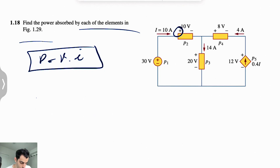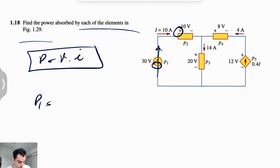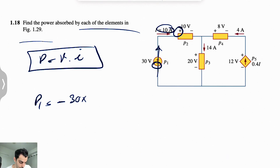Alright, so let's start with P1. If we look at it, the current is actually in this direction, so it's entering the negative pole of all of these elements, so we're going to have a negative sign. We need voltage times the current — the voltage is 30 and the current is 10 amps — so that gives us minus 300 watts.